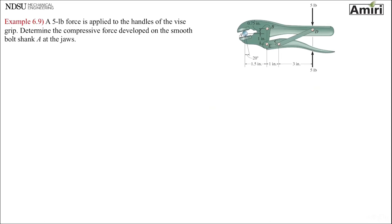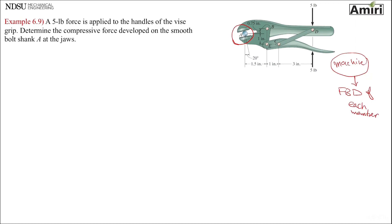Let's look at another problem. I drew the free body diagram of this one in a previous lecture when I went over frames and machines, so I'll draw it a little bit quicker this time. A five-pound force is applied to the handles of the vice grip. Determine the compressive force developed on the smooth bolt shank A at the jaw.